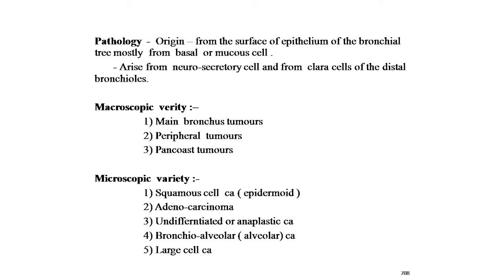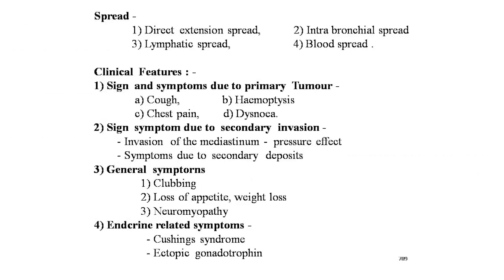Spread of primary carcinoma of the lung: direct extension, intrabronchial spread, lymphatic spread, and blood spread. Clinical signs and symptoms due to the primary tumor: cough, chest pain, hemoptysis, dyspnea. Symptoms due to secondary invasion — invasion of the mediastinum with pressure effects. General symptoms: clubbing of the nails, loss of appetite, weight loss, neuromyopathy, and endocrine-related symptoms such as Cushing's syndrome and ectopic gonadotropins.